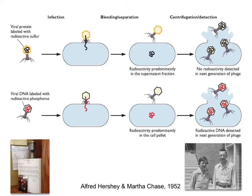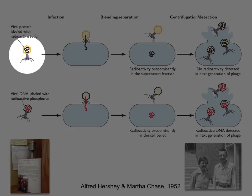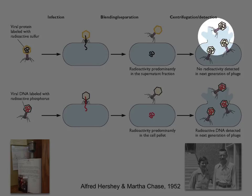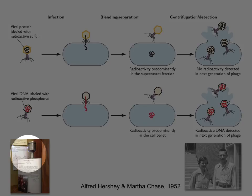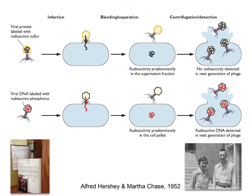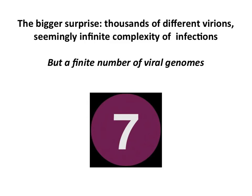And then the DNA was detected in the next generation of phage. When you labeled the protein — the coat of the virus — that did not remain cell-associated and was never passed on to the next generation. This is called the Hershey-Chase experiment. If you ever go out to Cold Spring Harbor for a meeting, there's a library out there — I think it's called the Carnegie Library — and they have one of Hershey's blenders in a glass case there. It's pretty neat. It was out there this summer.